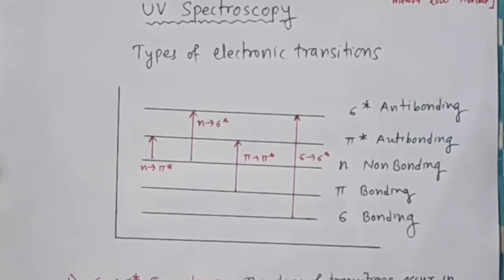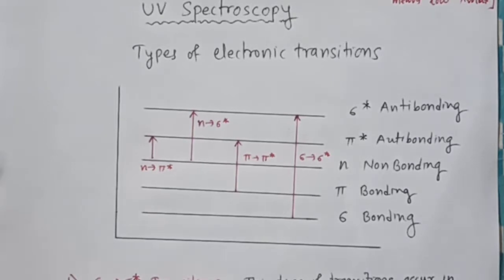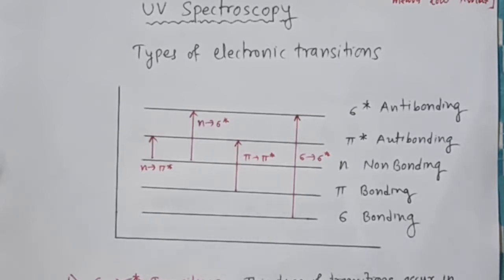So what are the electronic transitions possible in the molecule? They are represented in the diagram below. There are four different types of transitions possible in ultraviolet spectroscopy. We will go through them one by one according to the energy difference.